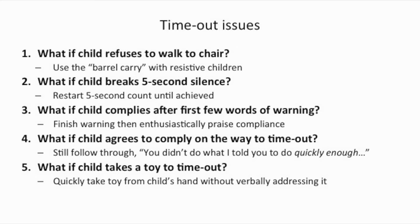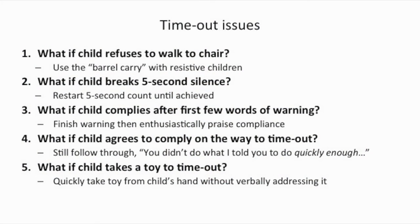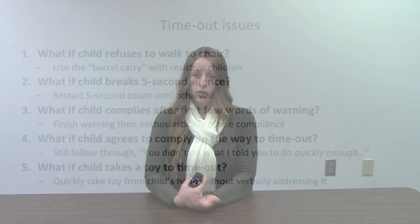If the child breaks the five seconds of silence, simply restart the five-second count, not the three-minute count. If the child complies after the first few words of the warning, finish the warning and then enthusiastically praise compliance. This teaches the child that even if they comply mid-warning, they still receive that boring, predictable warning — but they will still get praise.